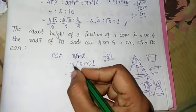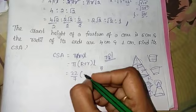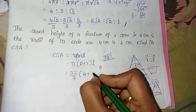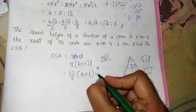Now we substitute here. π is equal to 22 by 7 into capital R is 4 plus small r is 1. We have slant height is 5.